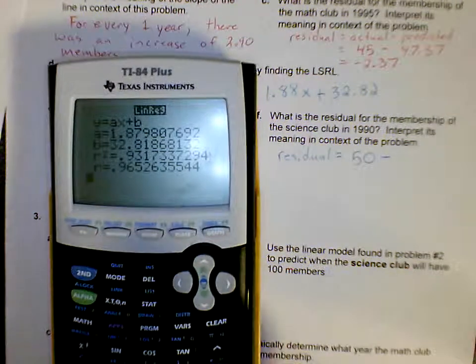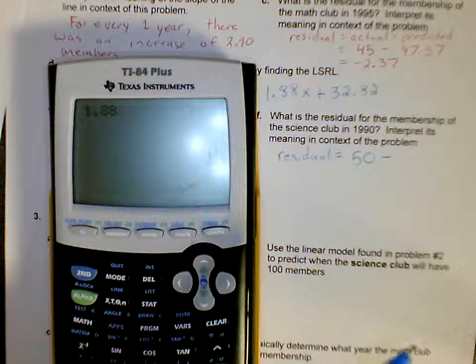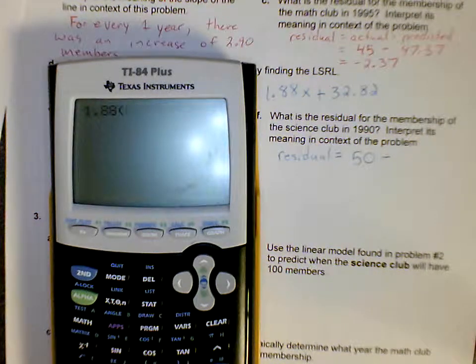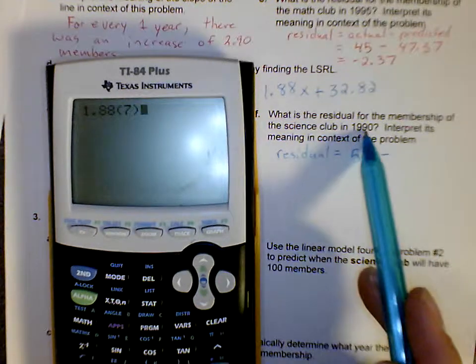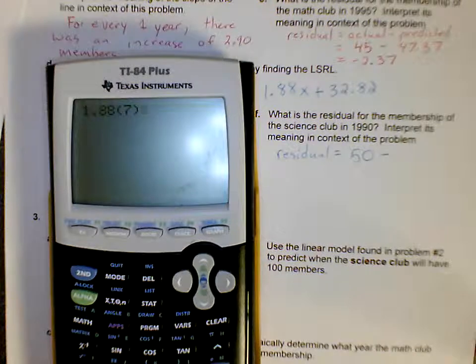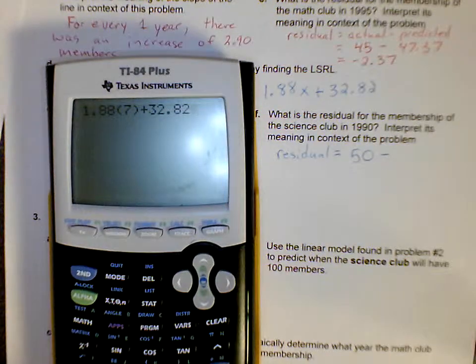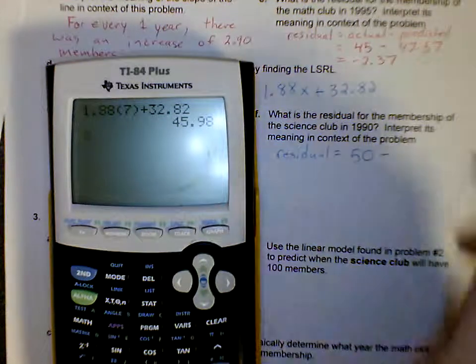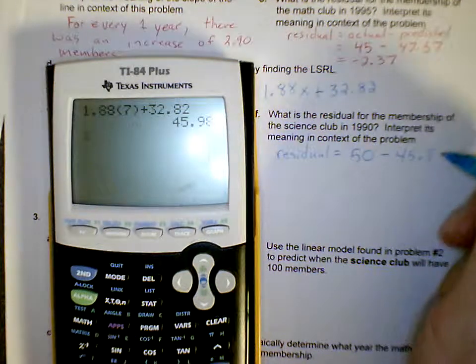And we're going to subtract our predicted value. Once again to find our predicted value, we're going to use that equation we just found, so 1.88. Instead of putting x though, we're going to put the number 7, because the year 1990 is 7 years since 1983. So times 7 plus 32.82, and get a predicted value of 45.98.